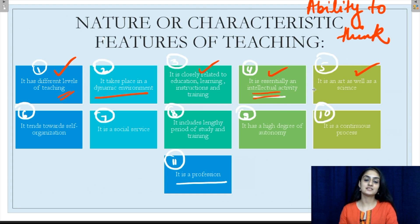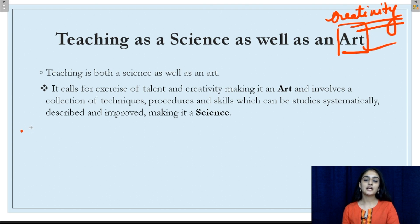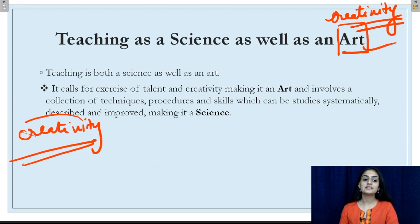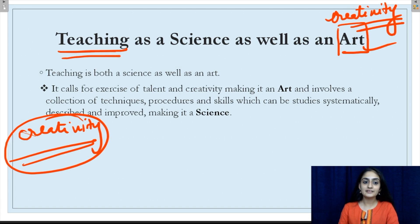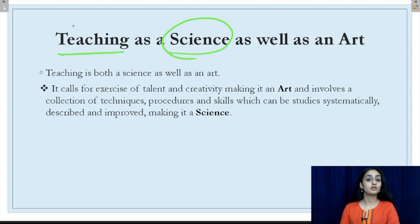The fifth characteristic: teaching is an art as well as a science. Since teaching calls for an exercise of talent and creativity, it is an art. For example, a teacher guiding a student on how to draw a house depends on the creativity of the teacher to describe and demonstrate it. Science is a collection of techniques, procedures, rules and skills which can be studied and improvised — and so is teaching. It consists of many techniques, procedures and skills which a teacher must follow to become a good teacher, and all those techniques and procedures can definitely be improved. Therefore, teaching is both an art and a science.